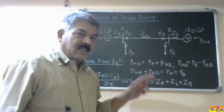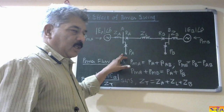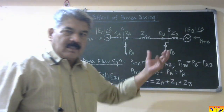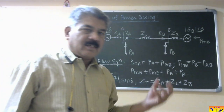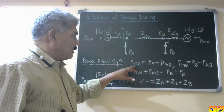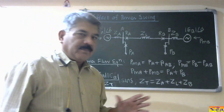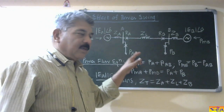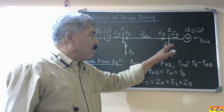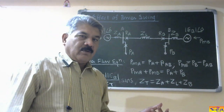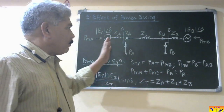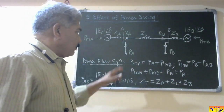For line AB, sources are at both ends, so we require a relay at both ends: relay RA and relay RB, both are distance relays. Electrical power output at A is PA and at B is PB. This system we take as the reference system. If delta is positive, power is flowing from bus A to bus B. If delta is negative, power is flowing from B to A. Here we are assuming delta is positive, so power flows from A to B.